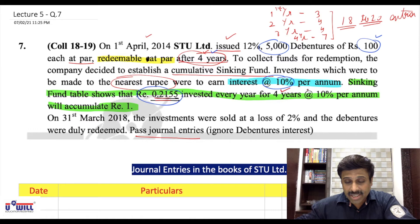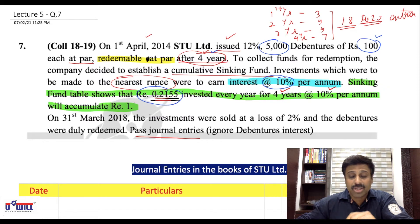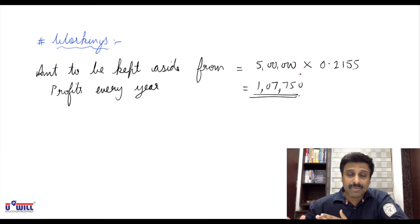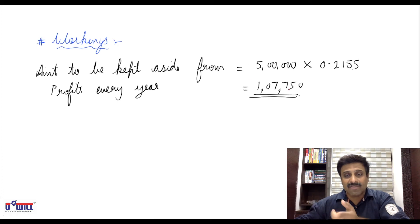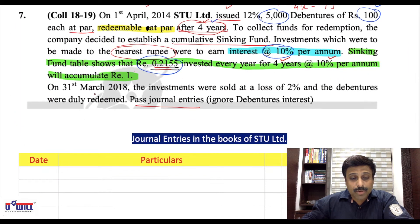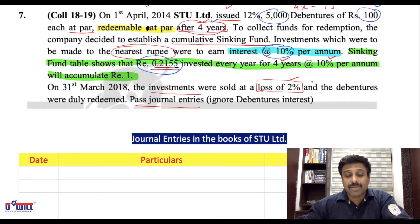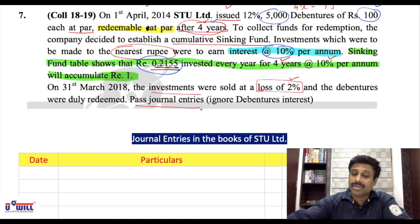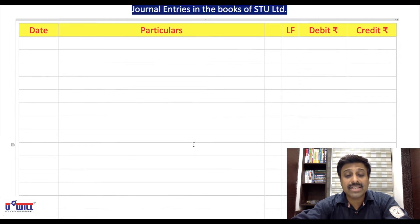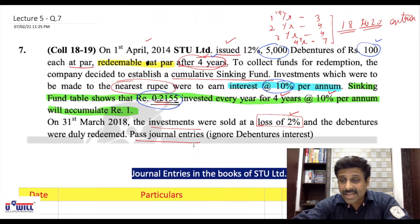To acquire ₹5 lakh, you need to keep aside ₹5,00,000 × 0.2155 = ₹1,07,750 per year — instead of ₹1,25,000 — because the money grows over time. On 31st March 2018, the investments were sold at a loss of 2%. We need to find the value of investments at that point and sell at a 2% loss. The debentures were duly redeemed. We are asked to pass journal entries, but we will also make all ledger accounts.